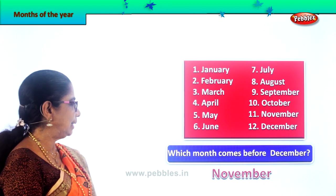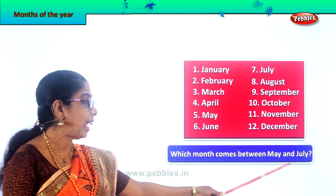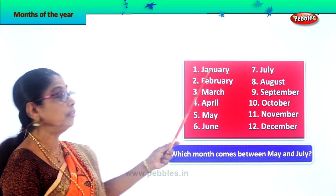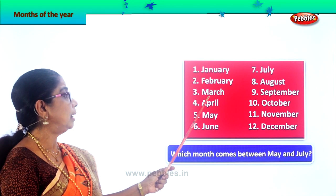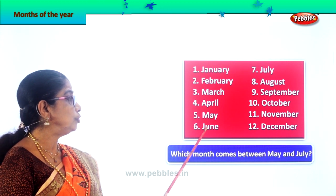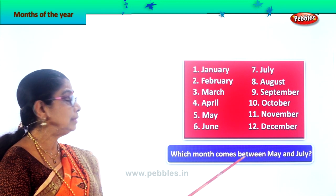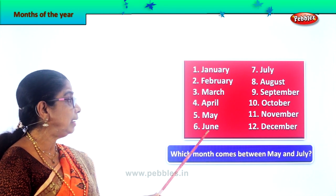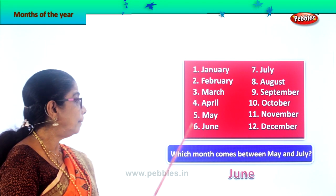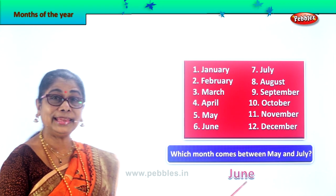Let's take another question. Which month comes between May and July? Let's go through the months: January, February, March, April, May — here is May. Then you have June, July. They are asking us: between May and July, which month comes in between? June! The month of June comes between May and July. Spell June — J-U-N-E, June.